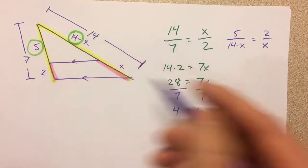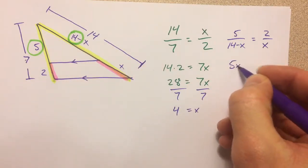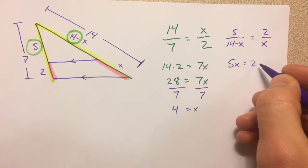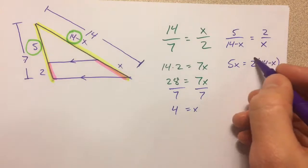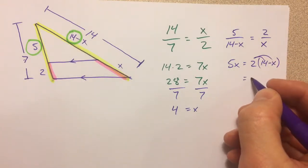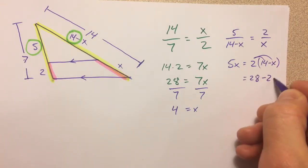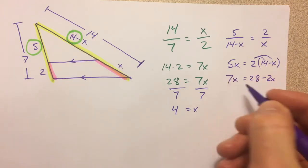And so you cross-multiply, 5 times x, 2 times 14 minus x. Make sure you distribute that 2. You get 28 minus 2x is 7x.